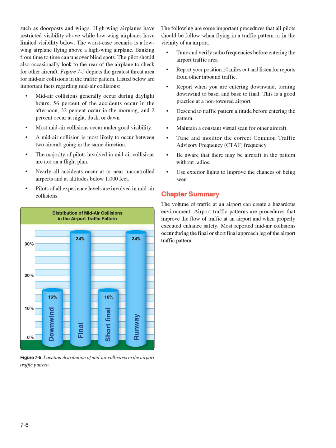Important procedures all pilots should follow when flying in a traffic pattern or in the vicinity of an airport: Tune in and verify radio frequencies before entering the airport traffic area. Report your position 10 miles out and listen for reports from other inbound traffic. Report when you are entering downwind, turning downwind to base, and base to final — this is good practice at a non-towered airport. Descend to traffic pattern altitude before entering the pattern. Maintain a constant visual scan for other aircraft. Tune and monitor the correct Common Traffic Advisory Frequency (CTAF). Be aware that there may be aircraft in the pattern without radios. Use exterior lights to improve the chances of being seen.